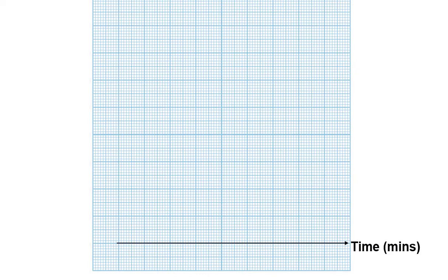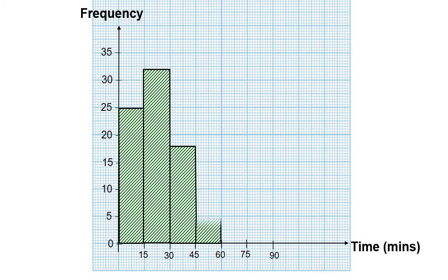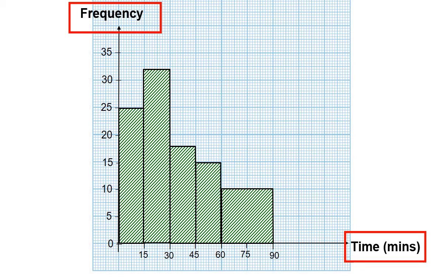Next, choose a suitable scale. Since the standard class size is 15, the scale for the x-axis is 2 cm to 15 minutes. Since the largest frequency value is 32, the scale to be used is 2 cm to 5 units. Draw all the bars for each class interval. For the last class interval, the height of the bar is 10, since the area of the bar representing the frequency is 20. You can verify this by multiplying 10 by 2, which gives 20. Don't forget to label the y-axis as frequency and the x-axis as time in minutes.